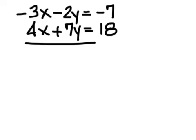Example. Negative 3x minus 2y equals negative 7. And 4x plus 7y equals 18. Forget about the negative sign on the 3x for right now. Just think of it as 3 and 4. What is the lowest number that 3 and 4 go into? 12.